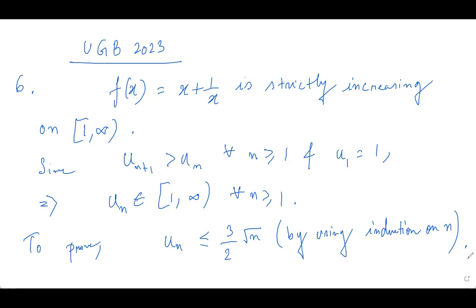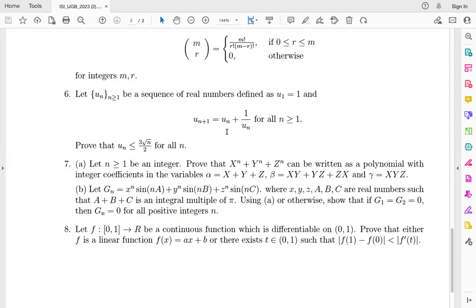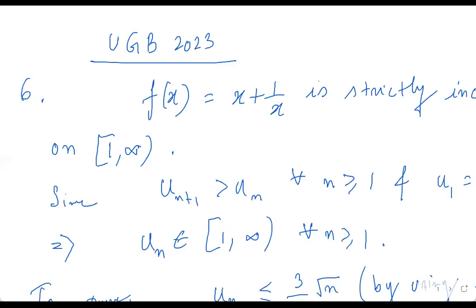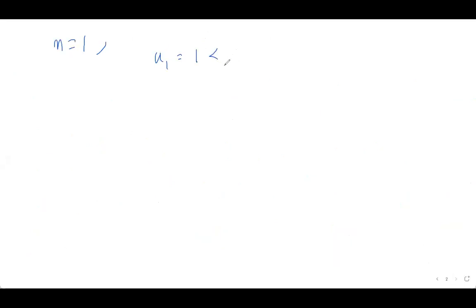For n = 1, the inequality is true because u_1 = 1 is less than or equal to 3/2, which is true.